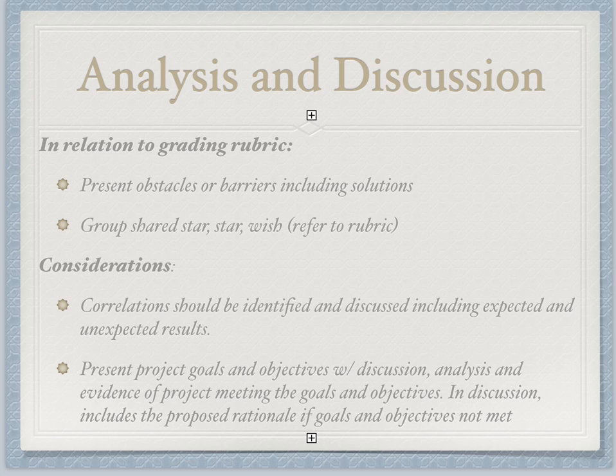Continuing on with the rubric: present obstacles or barriers, including solutions. So important — this is where a lot of the learning actually takes place on how to improve the process for next time. Also, another part of the rubric refers to the star-star-wish format. We want to see if the group shared a star-star-wish, where a star is how you made a difference or an impact, or how your project proposal made a difference or an impact. Then your wish is what you would have done differently next time. This is very important in considering how you're refining your project and process for next time.